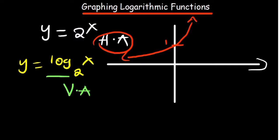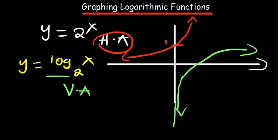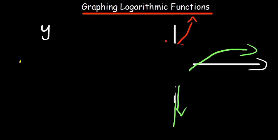So it basically comes out like this — it can't cut the y-axis, and that's why we are saying it has what we call the vertical asymptote. So now there are a few things you have to understand in order to be able to sketch a logarithm.